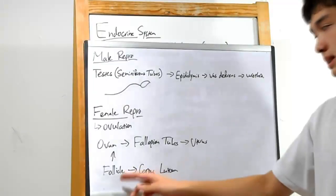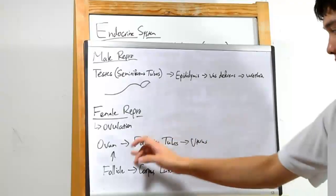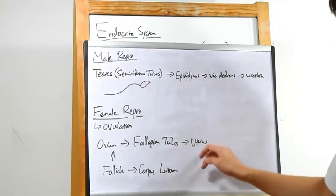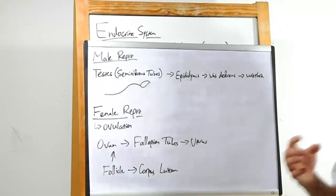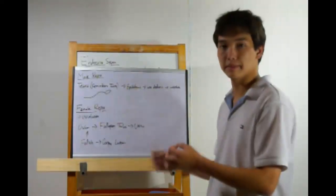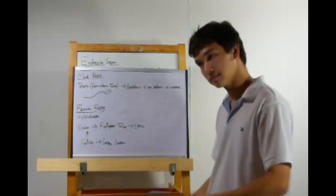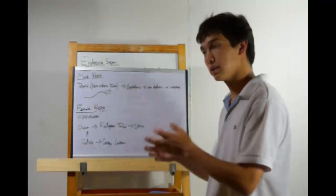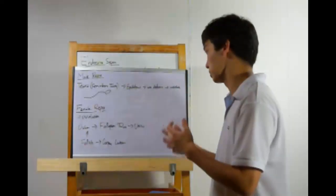The ovum is kept in something called a follicle. And once a month, an ovum is released. The ovum will then travel through the fallopian tubes and into the uterus. The follicle, on the other hand, will become something called the corpus luteum. This will secrete the female sex hormones. This causes the development of the uterine lining, which is a lining on the uterus. This is highly nutritious and will help nourish a developing child...